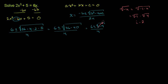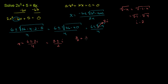So we are left with x equals 6 plus or minus 2i over 4. If we simplify by dividing numerator and denominator by 2, that's 3 plus or minus i over 2. Written as two distinct complex numbers: 3 halves plus 1 half i, or 3 halves minus 1 half i.